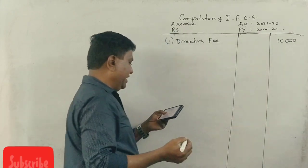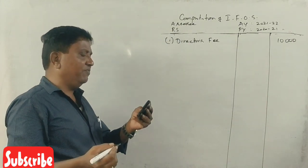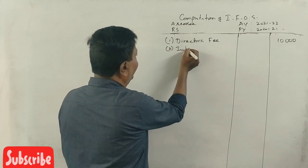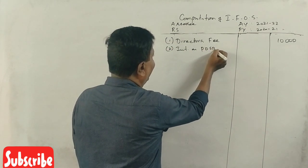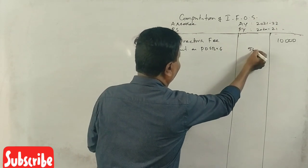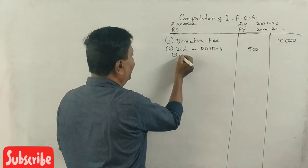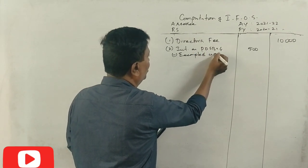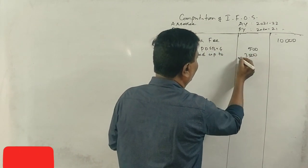Next one, interest from post office savings bank account, fully exempted. Interest on post office savings bank account, 500 rupees. Exempted up to 3,500 rupees.